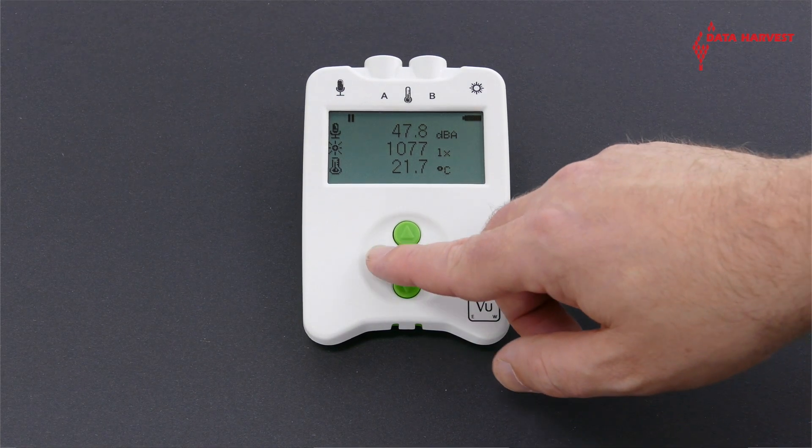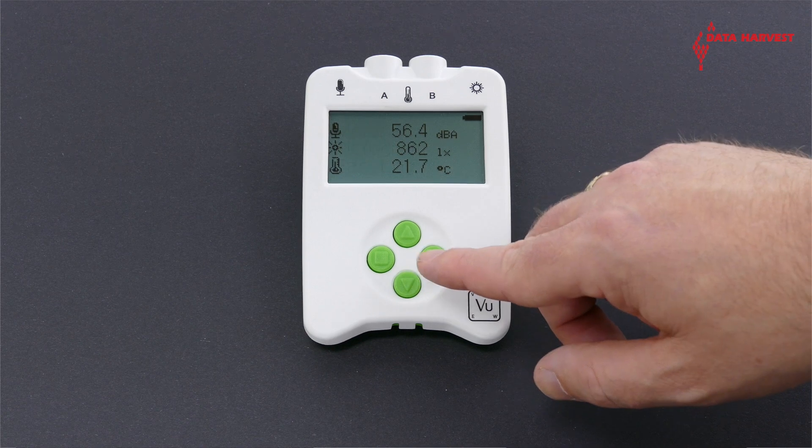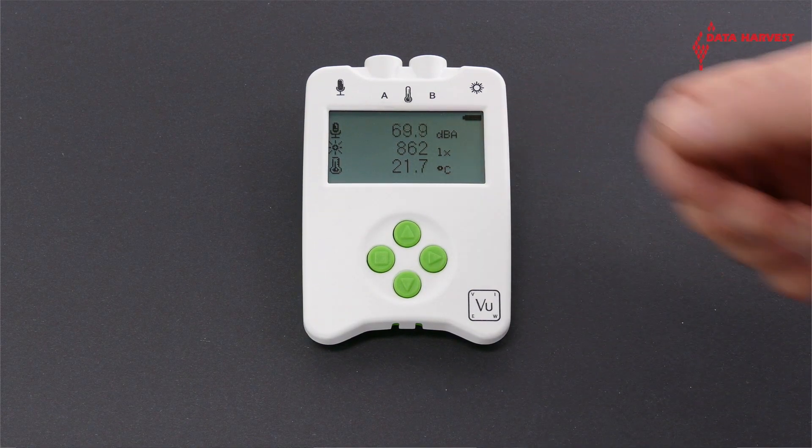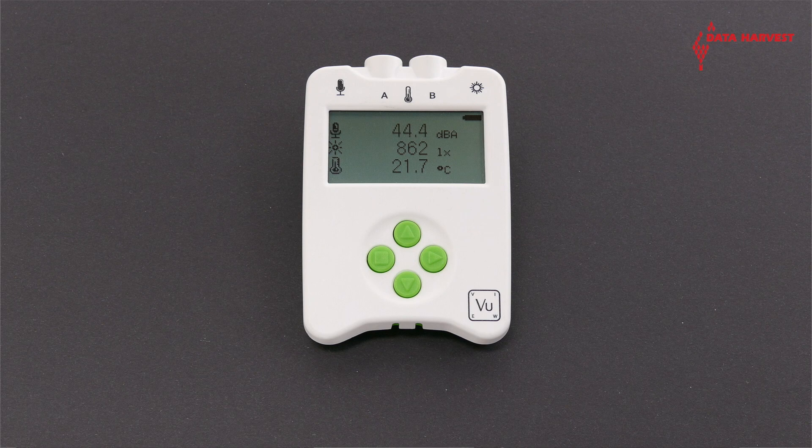VIEW can display its readings on its LCD screen. It can also collect and store data onto its memory, which can either be reviewed on its screen or on a computer using the EasySense software.